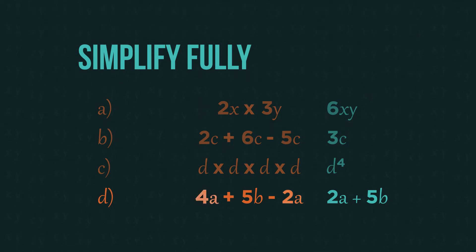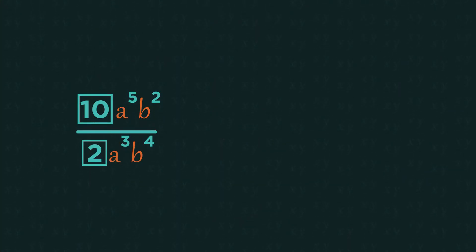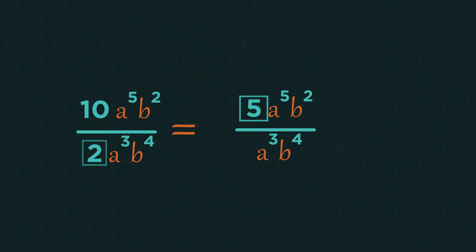So 4a subtract 2a is 2a. For division, you can cancel out the numbers exactly as you would with fractions. And we can also cancel out letters. So 10 divided by 2 is 5. And then, because we have 5 a's in the numerator and there are 3 in the denominator, this means we can cancel out 3 of the a's from both the numerator and denominator, leaving just 2 a's in the numerator.